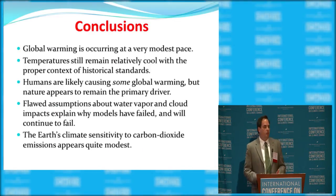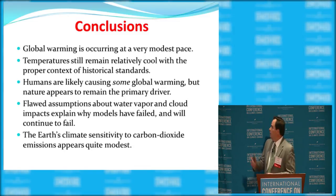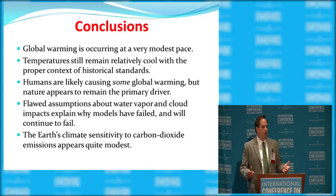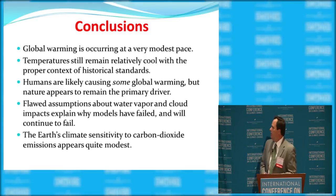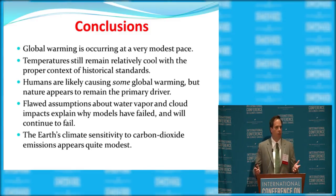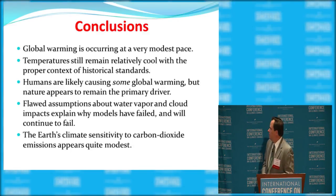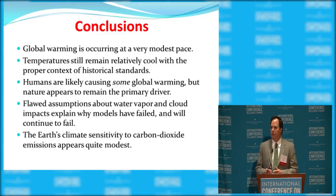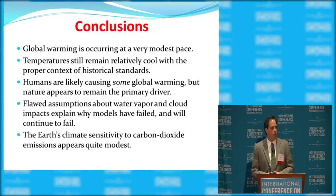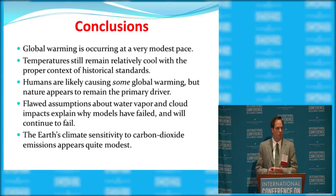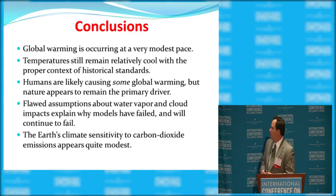In conclusion, here are the key points. Global warming is occurring — you add carbon dioxide and get a little warming — but it's occurring at a very modest pace. The context is extremely important: temperatures are relatively cool compared to the past 8,000 to 10,000 years. How can we be in a human-caused global warming crisis when we're cooler than the temperatures that predominated during most of human civilization? Humans are likely causing some global warming, but the sun and other natural factors appear to be the primary drivers, as shown by the objective data.